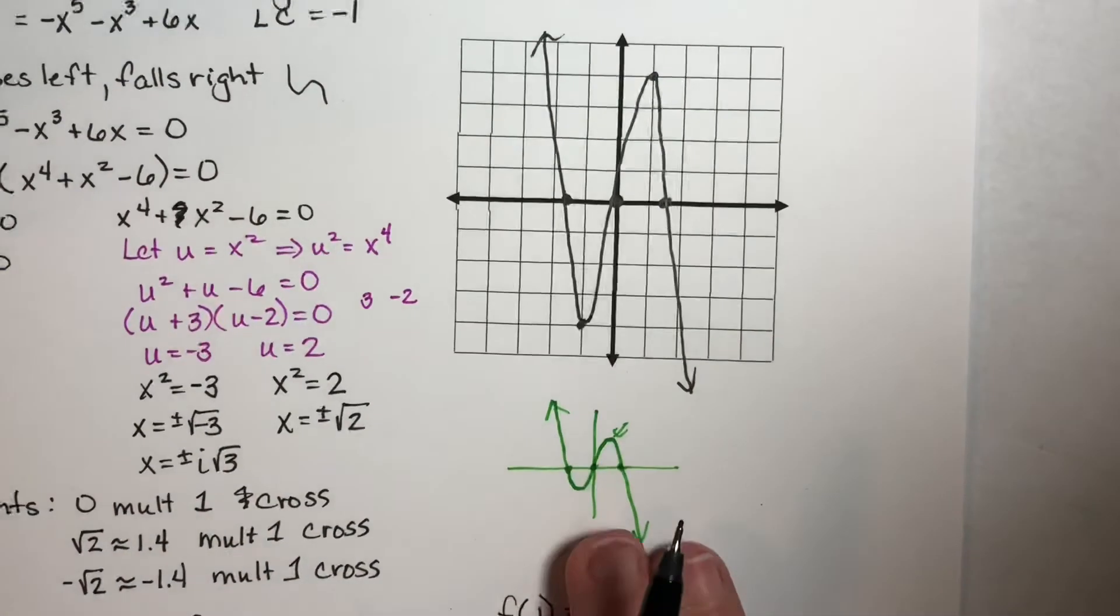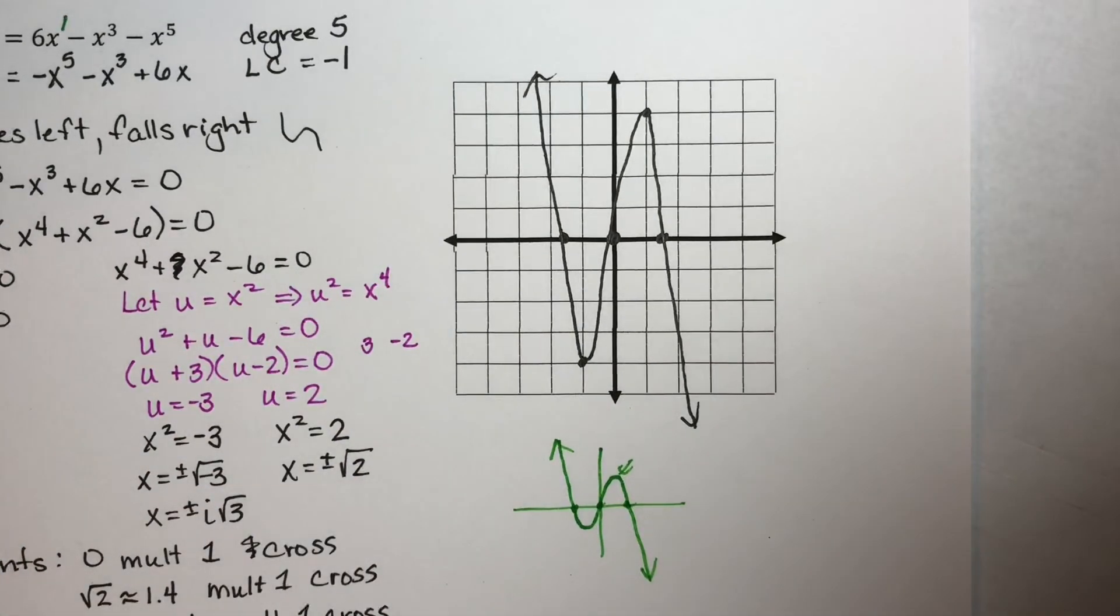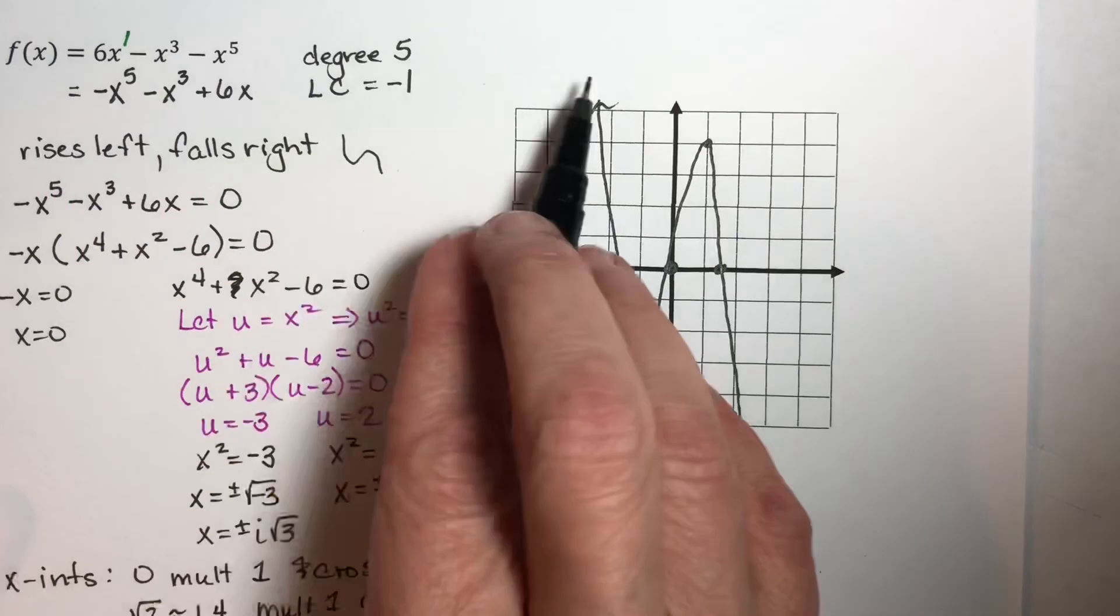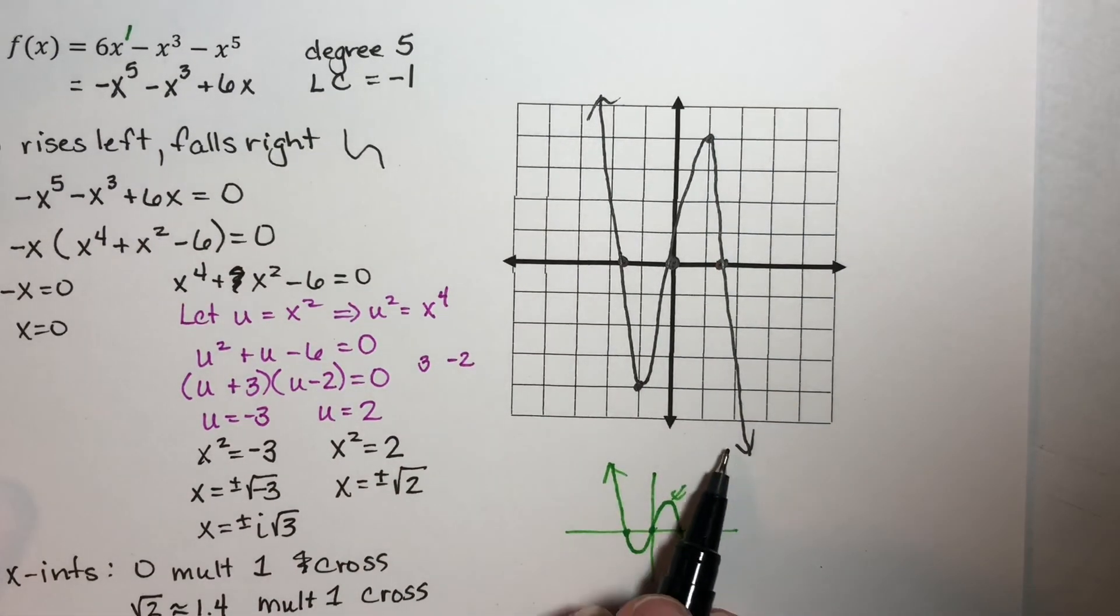Now, just the information we had forced some of this to happen. It rises to the left and falls on the right. That's what happened here.